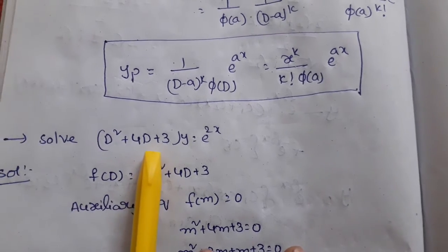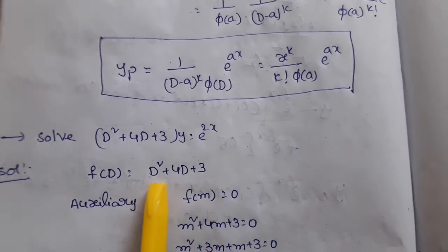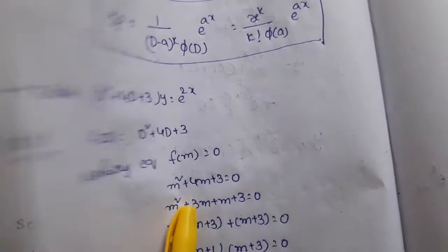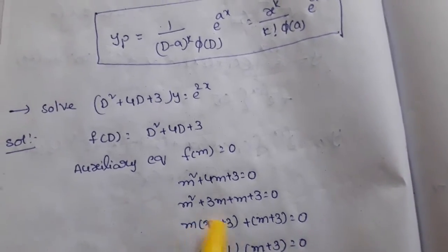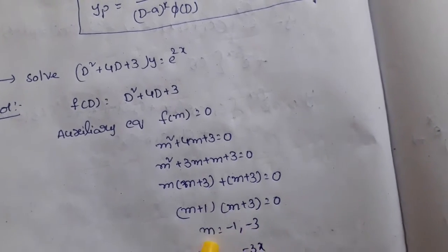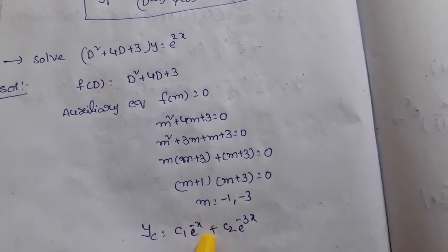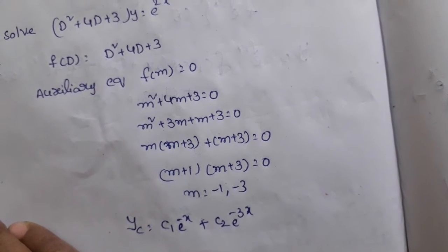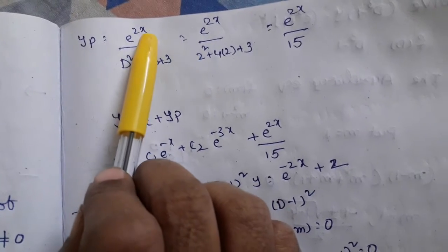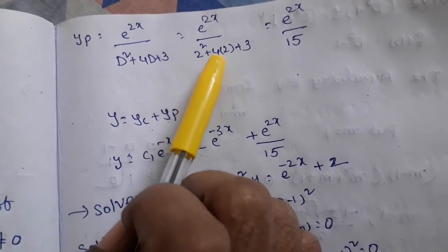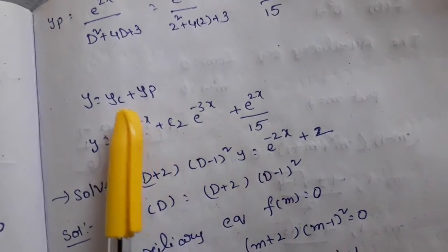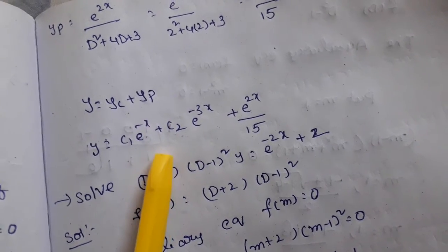Problem 1: Solve (D² + 4D + 3)y = e^(2x). f(D) = D² + 4D + 3. The auxiliary equation is m² + 4m + 3 = 0, which factors as (m+1)(m+3) = 0, giving m = -1, -3. So yc = c₁e^(-x) + c₂e^(-3x) (real and different roots). For yp, replace D with 2: 4 + 8 + 3 = 15, which is not 0. So yp = e^(2x)/15. The general solution is y = yc + yp.